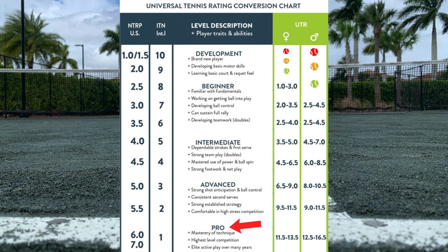You can see on the left that the best of the best with NTRP are between 6 and 7. Using the ITN scale they're considered a 1. For UTR, the best women are between 11.5 and 13.5, and the top men range from 12.5 to 16.5. UTR is an independent rating system from NTRP or ITN, but this chart is helpful — if you're more familiar with one system you can see how it translates to the others.